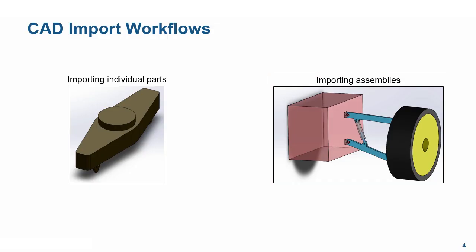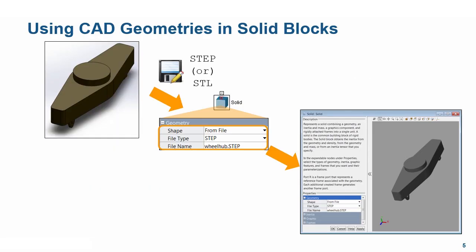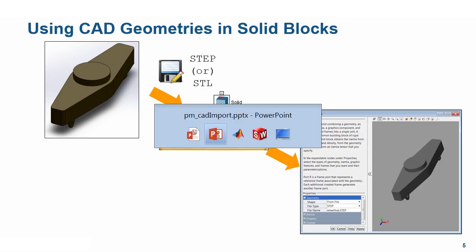Let's take a look at importing individual parts first. With most CAD platforms, we can save each part in our CAD model as a STEP or an STL file. This allows us to use these files to define solid geometries in SimMechanics. Let's switch to MATLAB to see how we can do this.